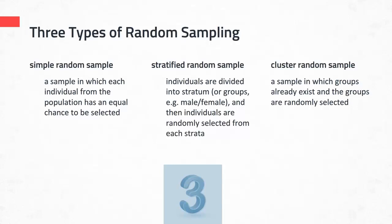Finally, there is cluster random sampling, where groups already exist and the groups are randomly selected. For example, a researcher could randomly select second grade classes in a district, and the students within those classes become part of the research. These are the three types of random sampling a researcher may use — either in a one-stage or multiple-stage design. In a multiple-stage design, a researcher can also mix random and non-random sampling at different stages.